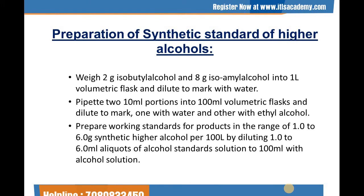Now see the preparation of synthetic standard of higher alcohol. Weigh 2 grams of isobutyl alcohol and 8 grams of isoamyl alcohol into a 1 litre volumetric flask and dilute to the mark — one with water and the other with ethyl alcohol. Prepare working standards for products in the range of 1–6 grams synthetic fusel alcohol per 100 litres by diluting 1–6 ml aliquots of the alcohol standard solution to 100 ml with alcohol solution.